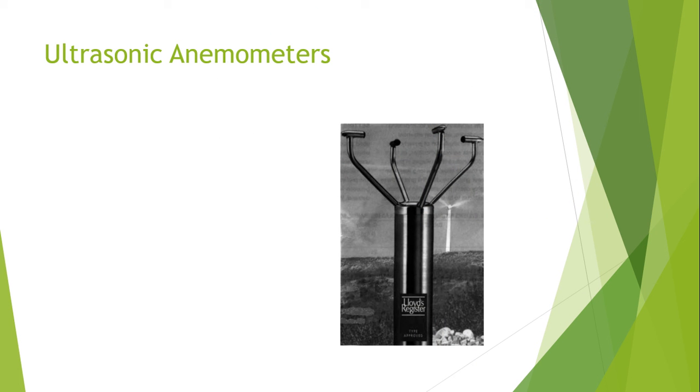This is an example of an ultrasonic anemometer. Ultrasonic anemometers basically work on the principle that the travel time for a sound wave through the air is affected by the wind speed component parallel with the direction of the travel. The basic element consists of an ultrasonic sound emitter and a receiver on the opposite side.